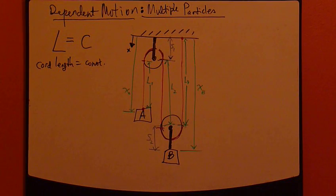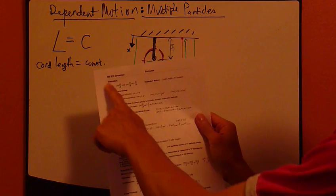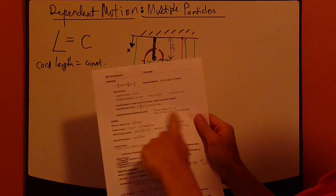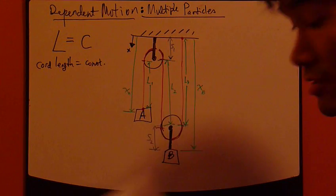All right, let's look at one last topic of chapter 12. If you look at this formula sheet, we've covered everything up here with kinematics, except for this thing called dependent motion. Let's look at it.